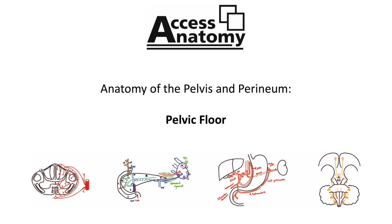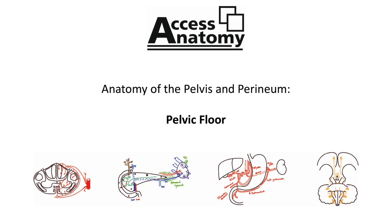Levator ani can be further divided into three parts: puborectalis, pubococcygeus, and iliococcygeus. Let's look at coccygeus first. Coccygeus extends from the inferior portion of the sacrum and the coccyx to the ischial spine, running deep to the sacrospinous ligament. Remember we have two of these muscles, one on either side of the pelvis.